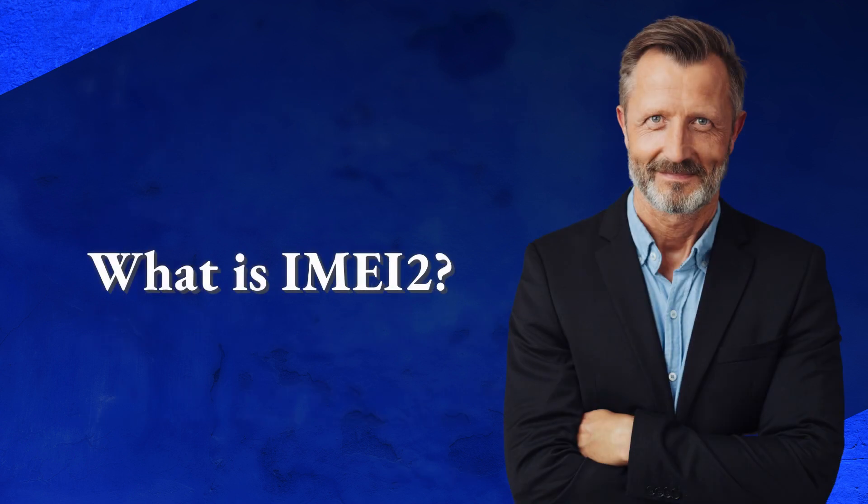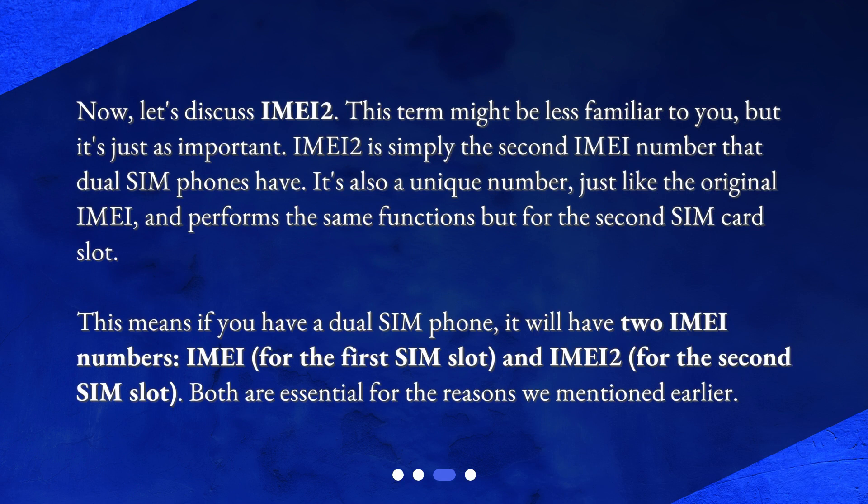What is IMEI 2? Now, let's discuss IMEI 2. This term might be less familiar to you, but it's just as important. IMEI 2 is simply the second IMEI number that dual SIM phones have. It's also a unique number, just like the original IMEI, and performs the same functions but for the second SIM card slot.